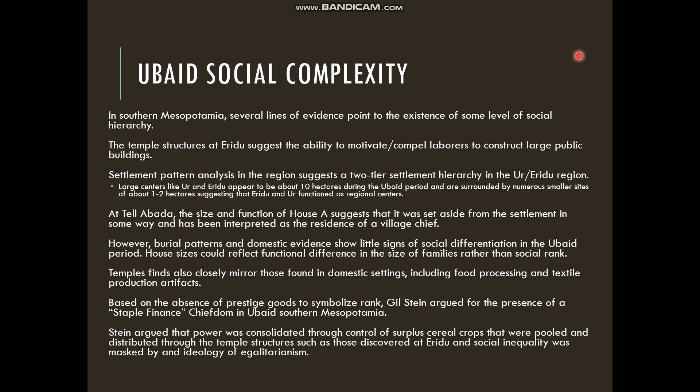Temple finds also often resemble those found in domestic settings and include food processing and textile production. This is where Stein's argument really comes in. He argues this is based on the presence of staple finance — that chiefs in Ubaid society didn't necessarily display power through prestige goods, but rather controlled power through controlling surplus cereal crops that were pooled and distributed through the temple structures. Eridu's temple functioned as this redistributive system.